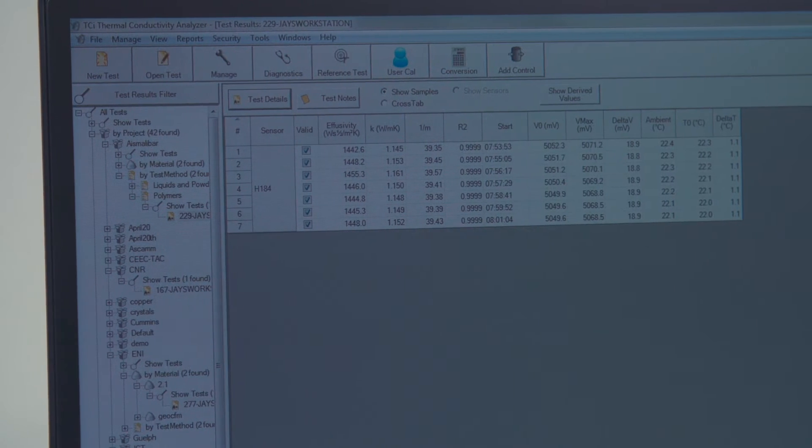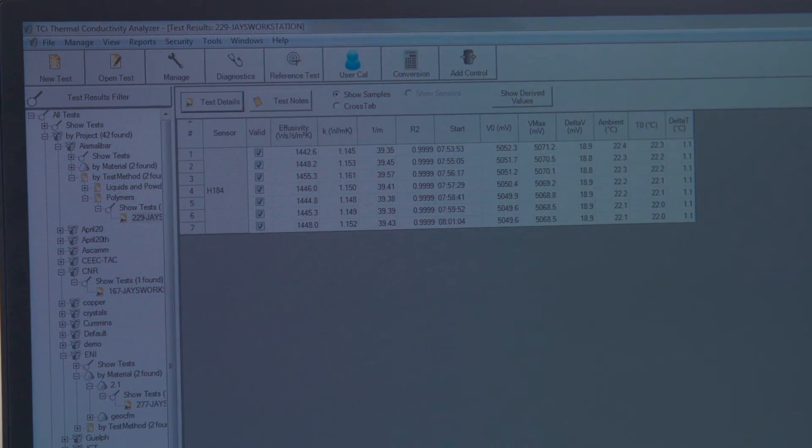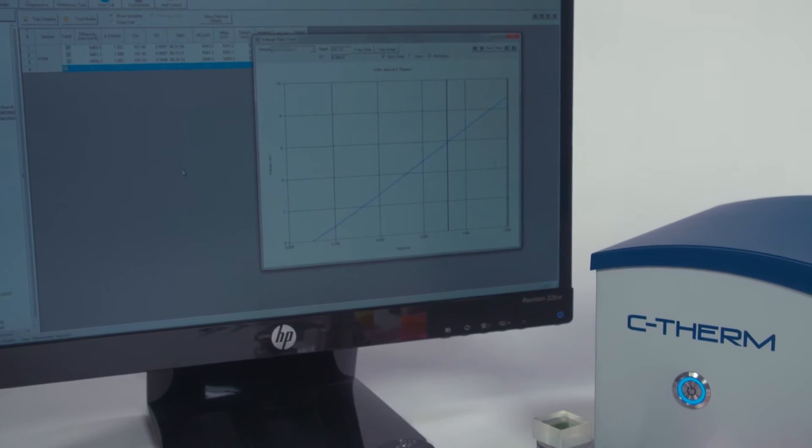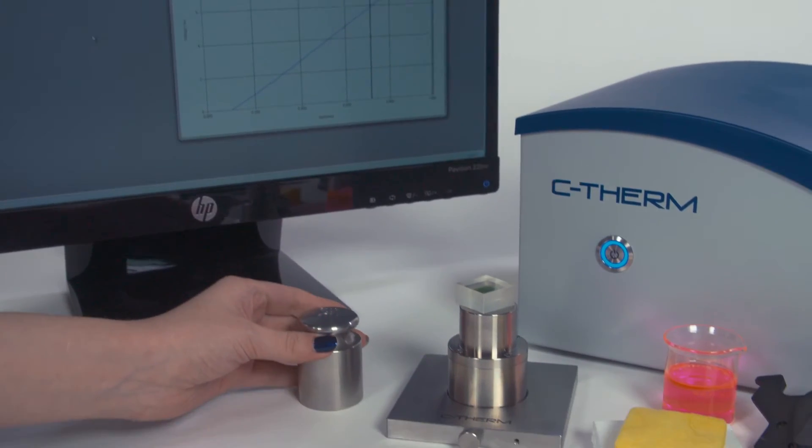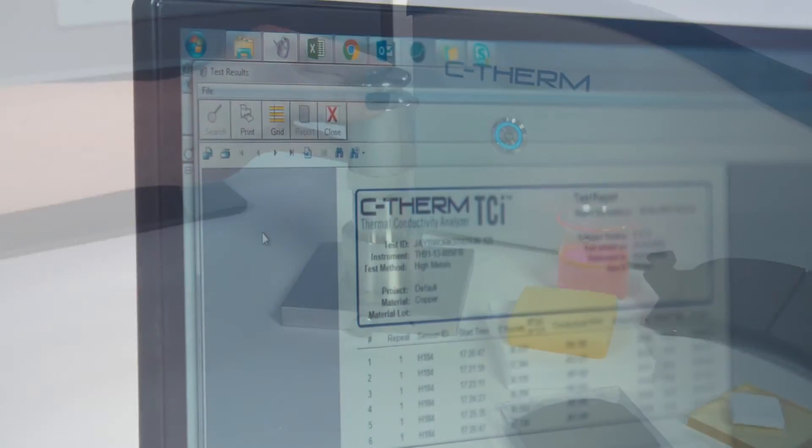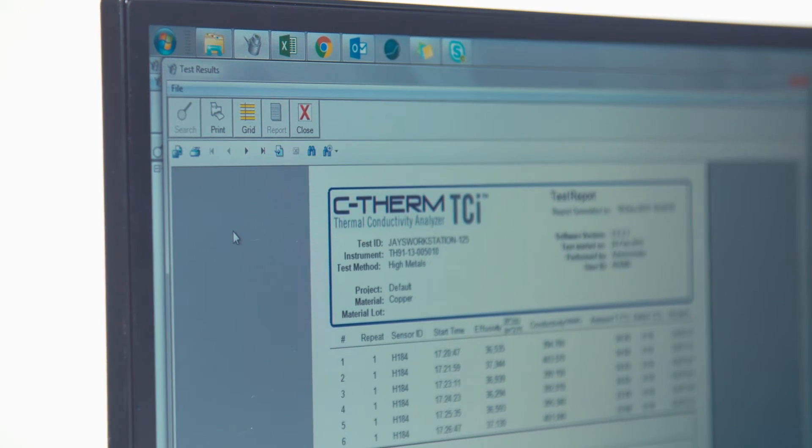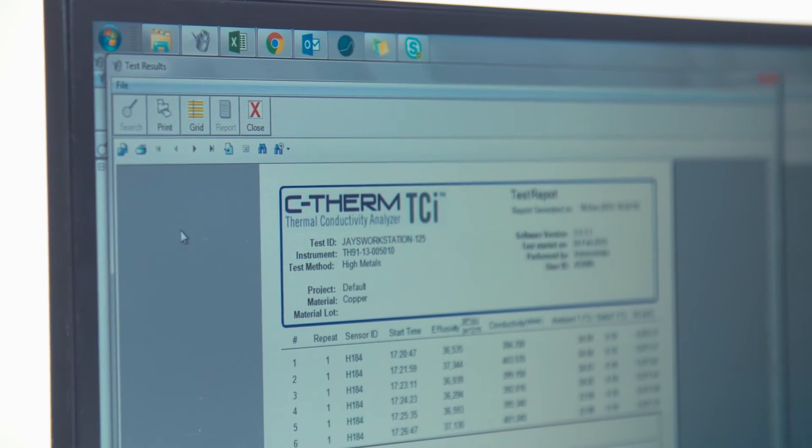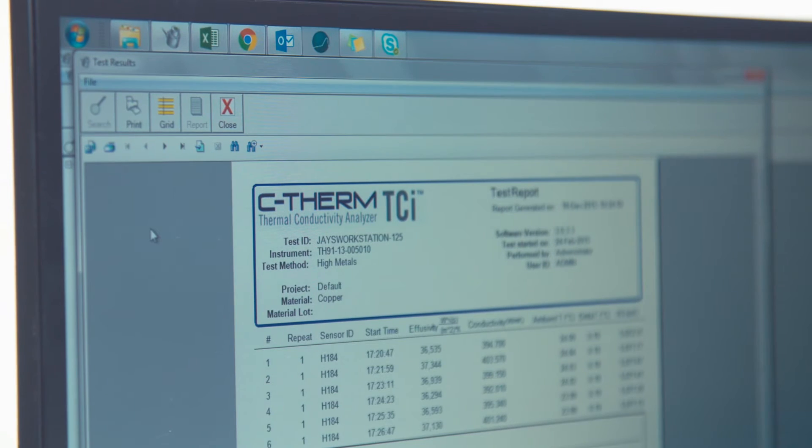The TCI software includes a full relational database with automated test report generation and offers easy export to Excel. The system also provides the ability to derive other thermal properties such as heat capacity with additional user inputted density data.